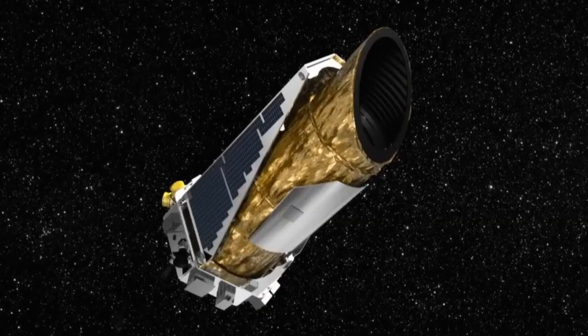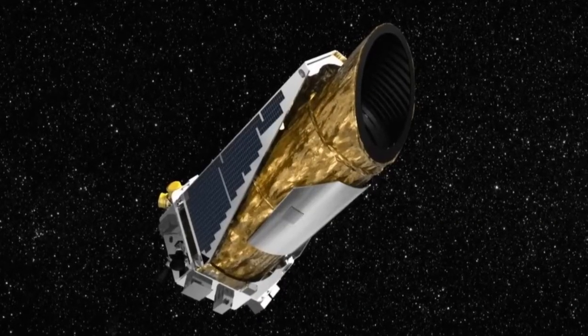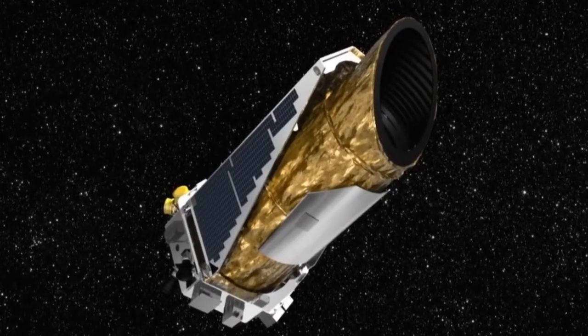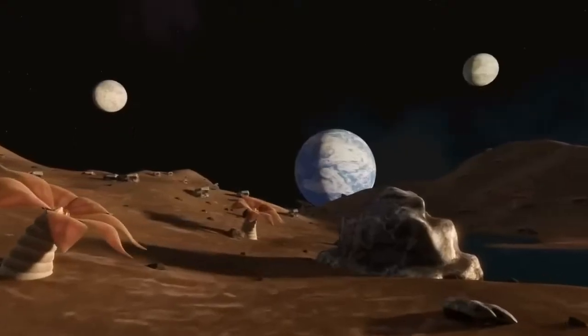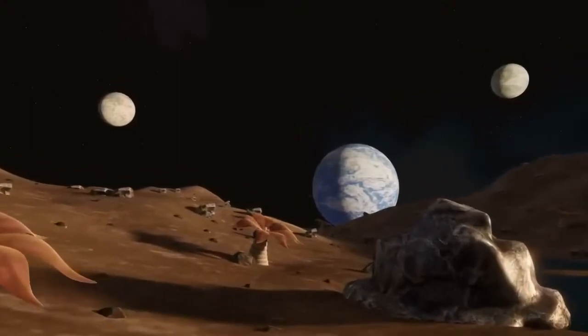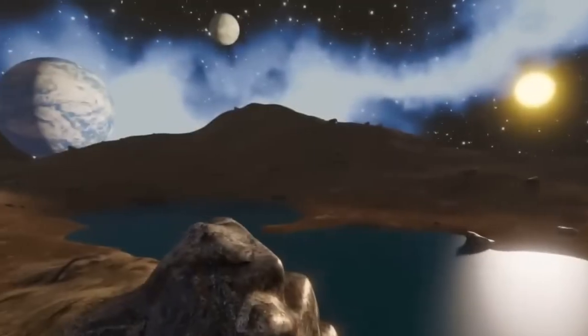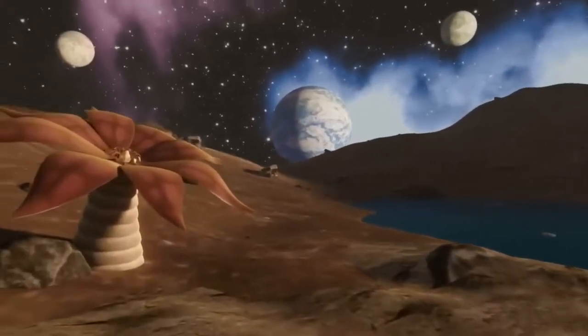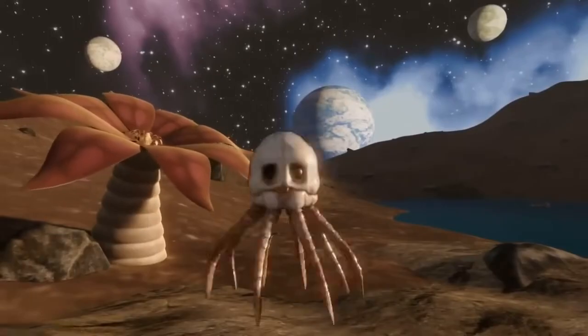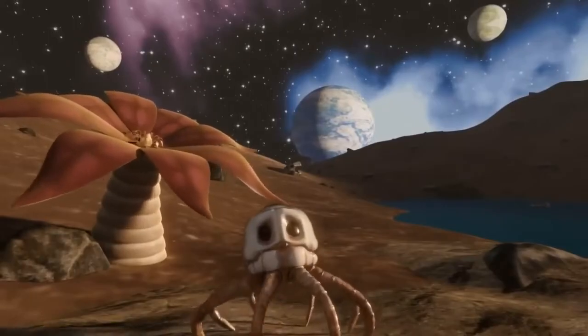The Kepler telescope, through its ingenious use of the transit method, has played a pivotal role in our understanding of exoplanets, contributing to the unveiling of more than 4,000 of these distant worlds. This wealth of discoveries has provided researchers with crucial insights into various aspects of exoplanets, including their size, orbital distance, and temperature preferences.